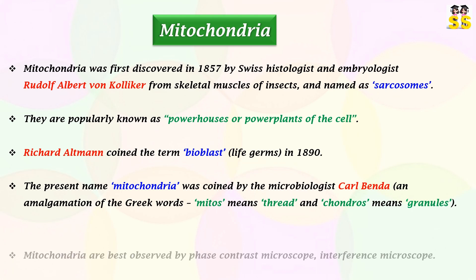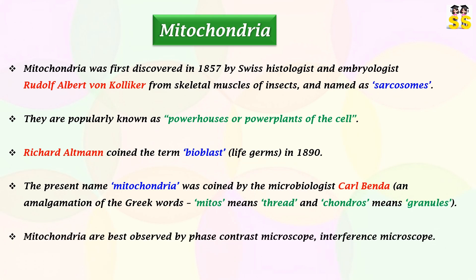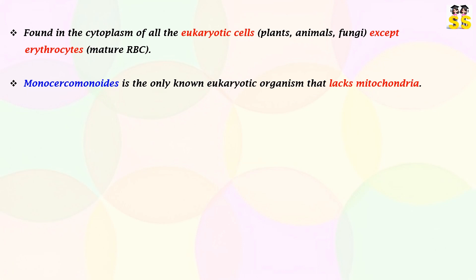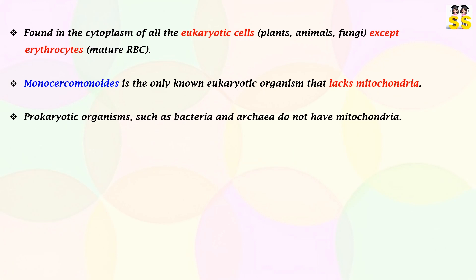Mitochondria are best observed by phase contrast microscope and interference microscope. Mitochondria are present in the cytoplasm of all eukaryotic cells including plants, animals, and fungi, except erythrocytes. The only eukaryotic organism known to lack mitochondria is monocercominoids. Additionally, prokaryotes such as bacteria and archaea do not have mitochondria.